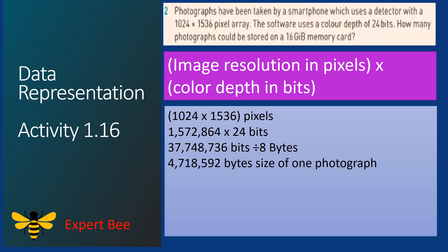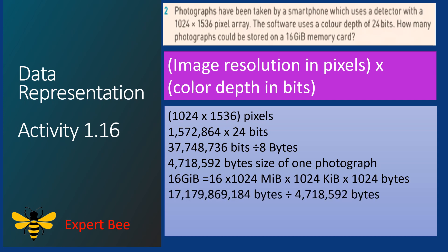Now we convert 16 GB into bytes so both values are in the same unit. We multiply 16 by 1024 to get megabytes, multiply by 1024 to get kilobytes, and multiply again by 1024 to get bytes, which equals 17,179,869,184 bytes — this is the total capacity of the memory card.